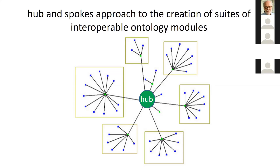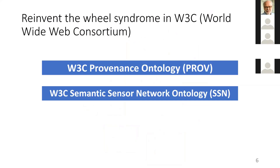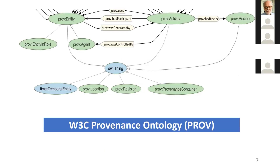This was the idea which has been pursued by several ontology communities over the last 20 years, but not by all ontology communities. To see what the idea involves, we'll consider a couple of examples: the provenance ontology and the semantic sensor network ontology.